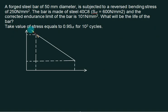Okay, let's start this one. First, we are given a forged steel bar of 50 mm diameter subjected to reversed bending stress of 250 N/mm². The bar is made of steel 40C8, with Sut given as 600 N/mm² and corrected endurance limit of 101 N/mm².